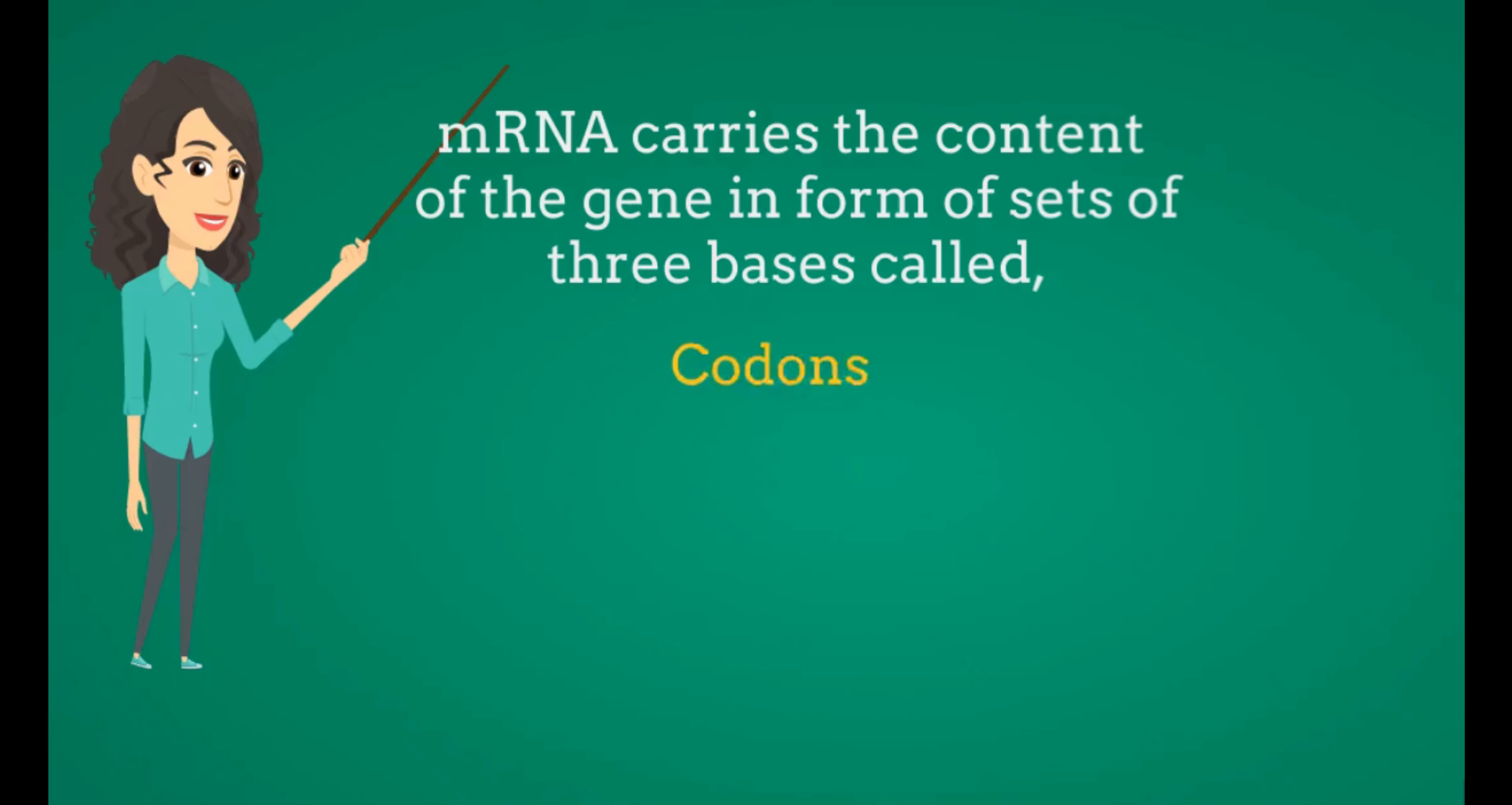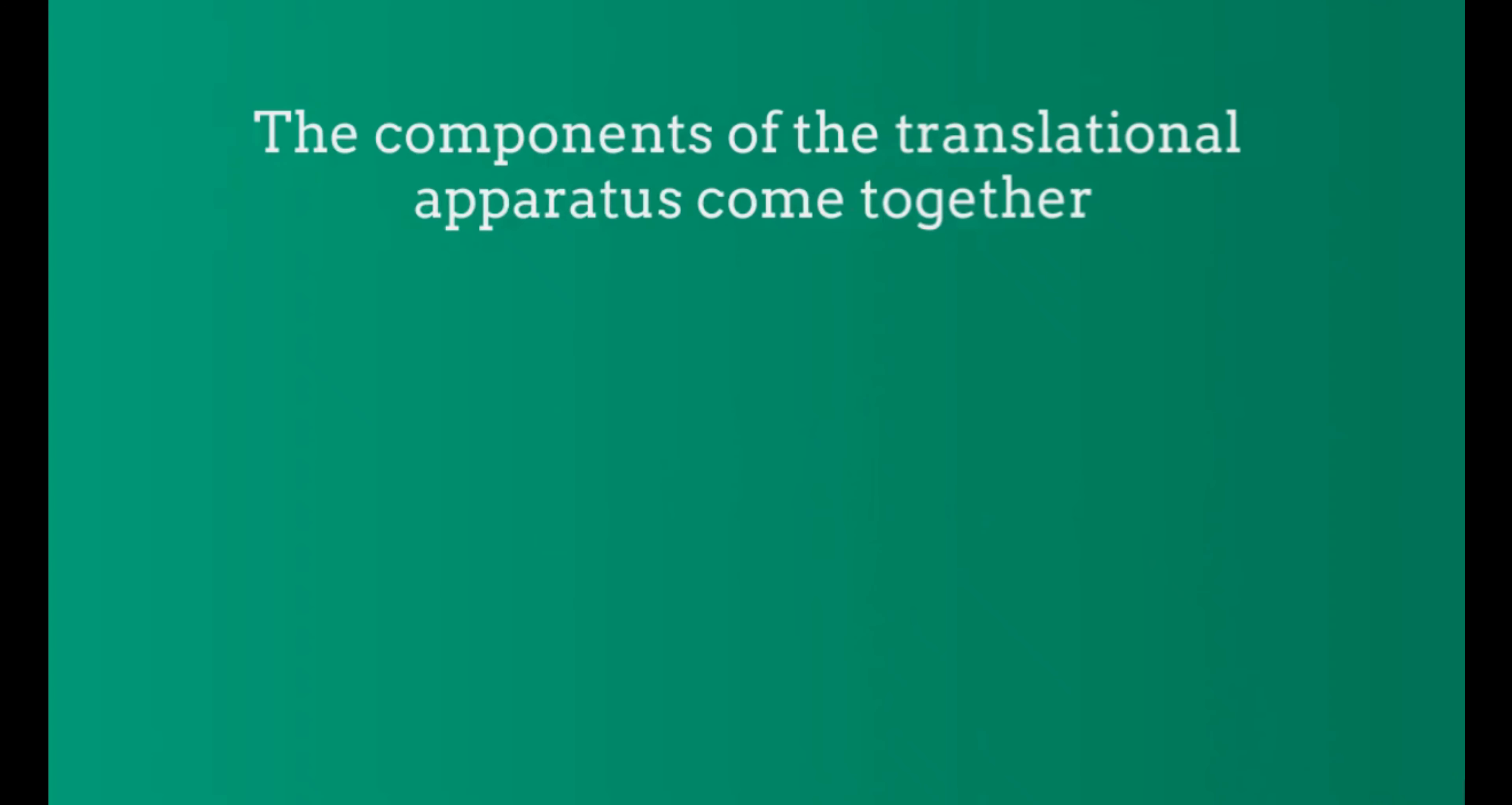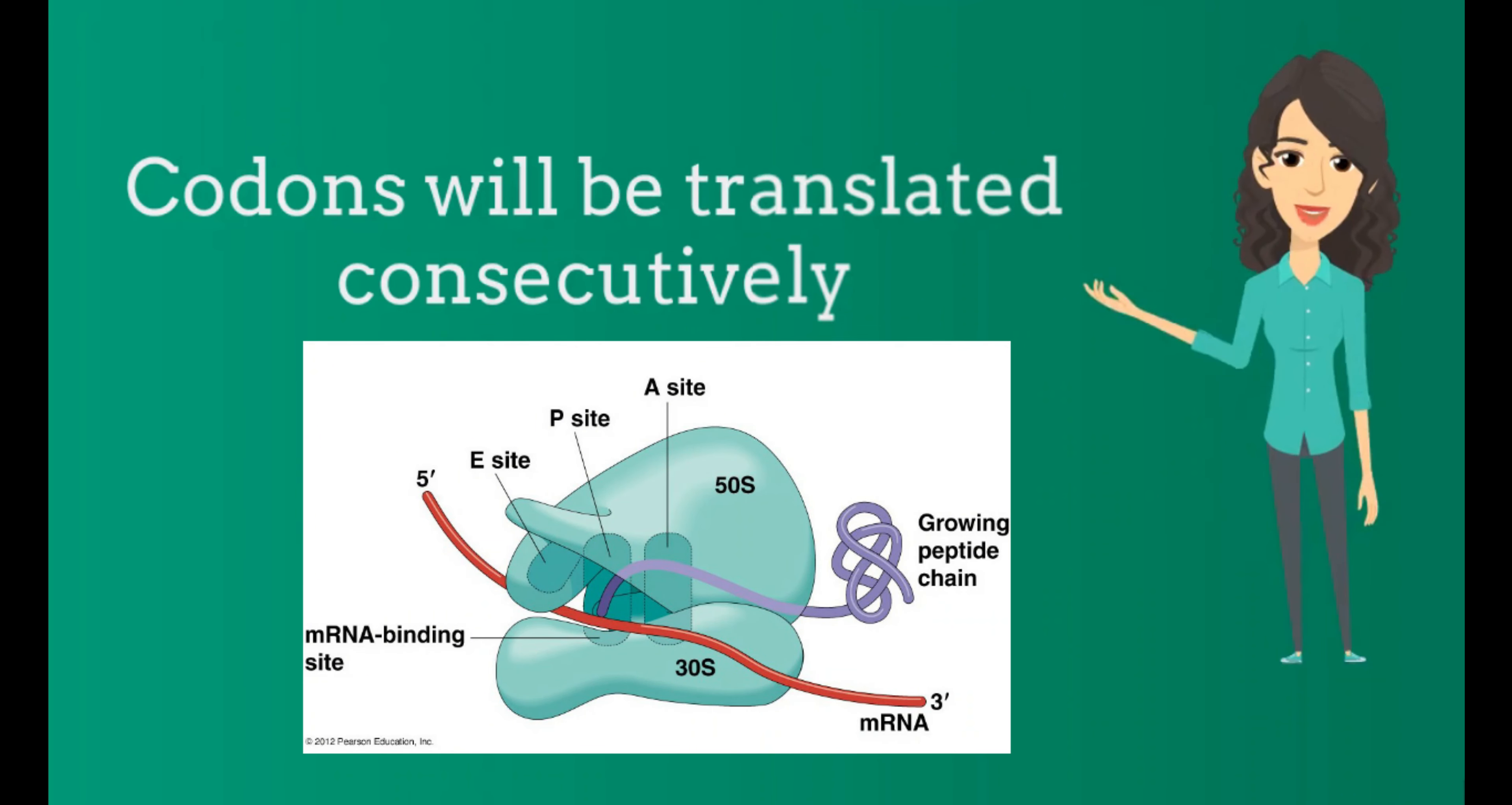mRNA carries the content of the gene in the form of sets of three bases called codons, each specifying one amino acid. On initiating the translation process, the components of the translational apparatus come together. Then the codons are translated consecutively.